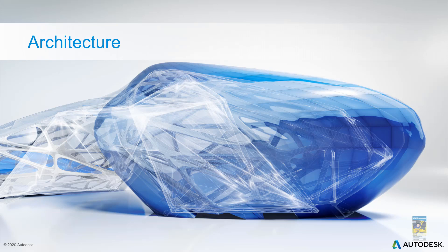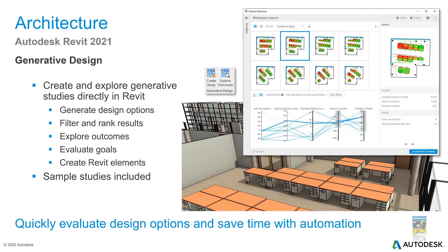Looking at the 2021 enhancements from an architectural standpoint, you now have the ability to work with generative design. You can use it to generate different schemes for a model and determine the most optimal design based on your criteria. You can filter and rank results, look at different outcomes, set goals and conditions, and explore sample studies included in the Revit 2021 software.